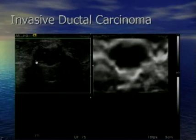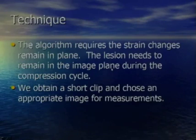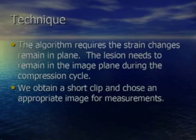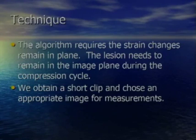When we have shadowing from a tumor on B-mode, we don't see that artifact on the elastogram. The algorithm requires that strain changes remain in plane — because we're comparing how the lesion changes with displacement, if the lesion moves out of the plane, we'll see a change that didn't actually occur, giving us an inaccurate elastogram. It's very important to monitor the B-mode image while doing the elastogram to make sure the lesion remains in the imaging plane.